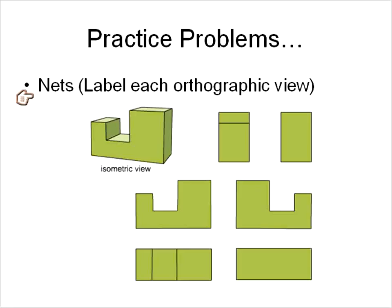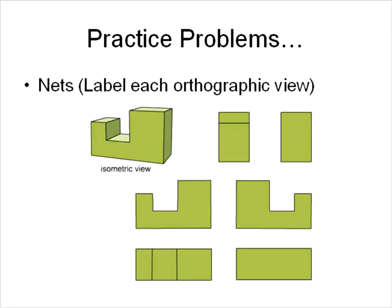Let's review nets - way back in January or early February. A net is where we take a shape and unfold it; we can look at each view as orthographic views. We can also look at the shape from every angle: front, back, left, right, top, and bottom. I'm going to tell you this is the front, so imagine standing here and walking around the shape.